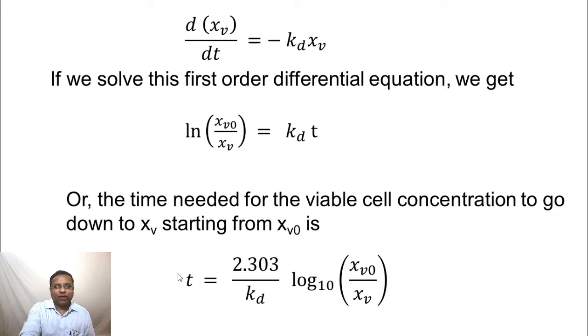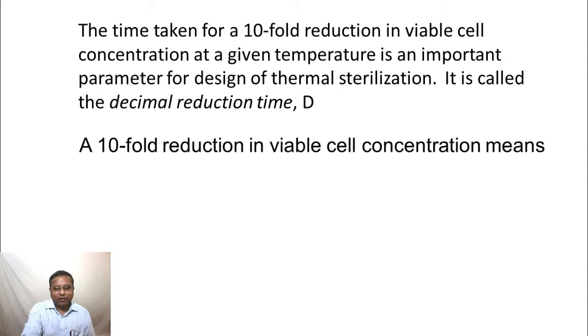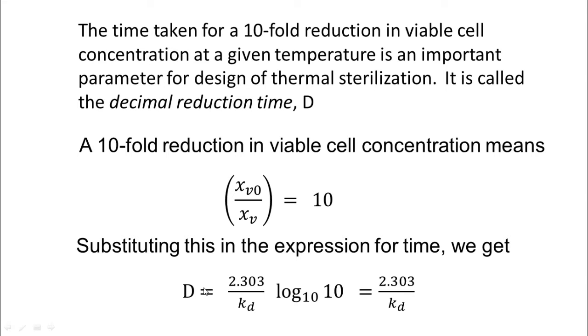The main thing here is that we have the time that is necessary for the viable cell concentration to go down from xv0 to xv under certain set of conditions which is characterized by this death constant kd or the sterilization constant kd. We also looked at something called a decimal reduction rate, which is the time that is required for a tenfold decrease in viable cell concentration at a given temperature. For a tenfold reduction, we replace xv0 by xv to be 10, and then we got the decimal reduction time d as 2.303 by kd.